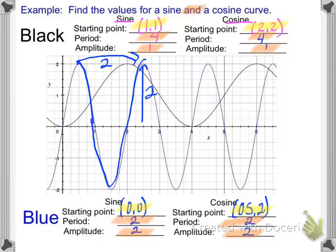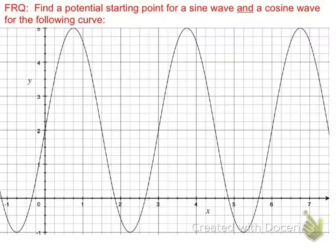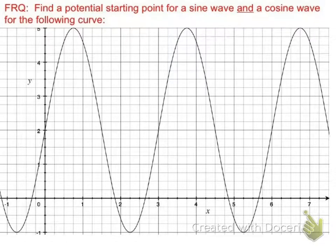We'll talk more about how to find different starting points on the same curve without using the graph in the long run. For the final checkpoint, find a potential starting point for both a sine wave and a cosine wave for the given curve. Do your best to find those two values, explain how you found them, and bring your questions into class so we can go over them. Good luck, and we'll see you in class.